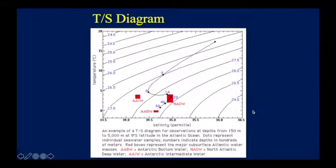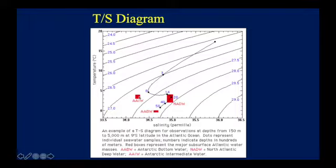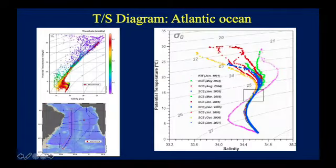Here is an example from the Atlantic Ocean at 4000 meters depth. You have one surface water mass with one characteristic, then close to Antarctic Intermediate Water (AAIW), then North Atlantic Deep Water (NADW), and then Antarctic Bottom Water (AABW). So you have four water masses from that Atlantic TS diagram.